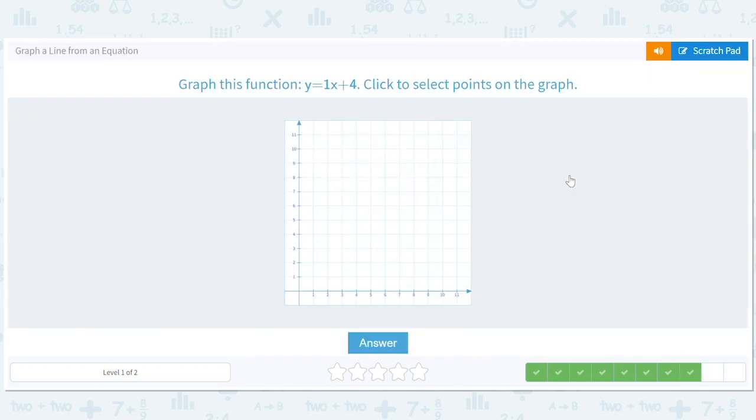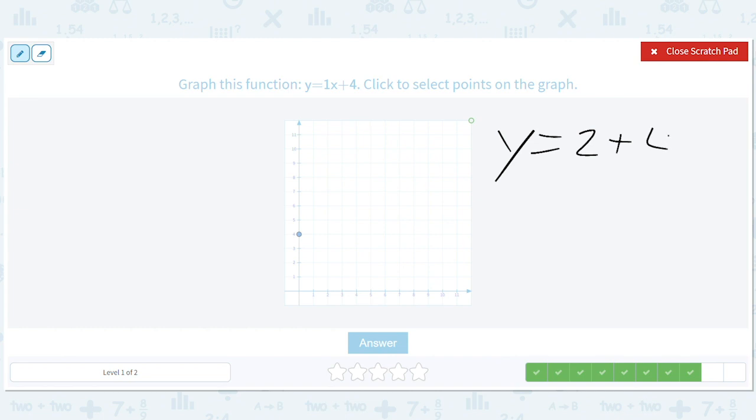Let's do this one a different way. Let's plug in x equals zero, which we know the y-intercept is four. And then let's go ahead and plug in x equals two. So when we plug in x equals two, what do we get? y equals two plus four. So y equals six.